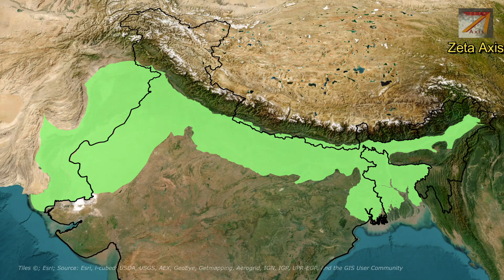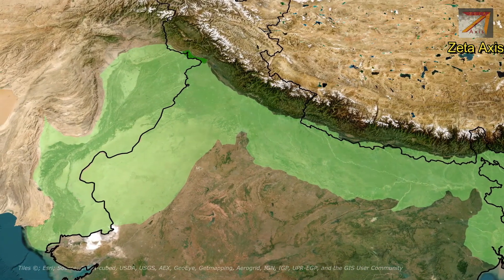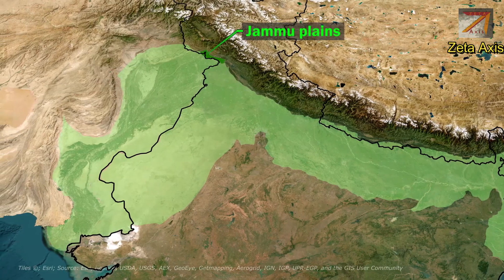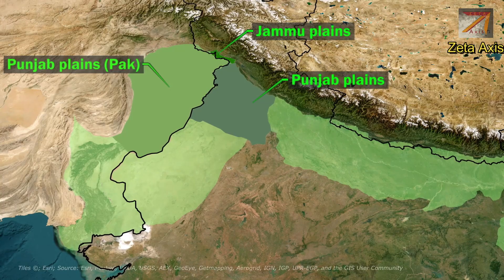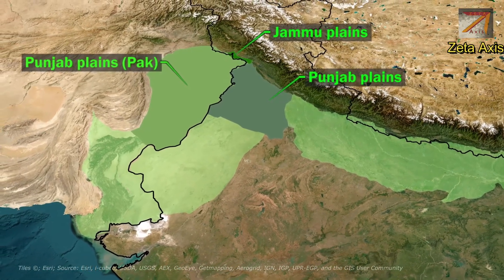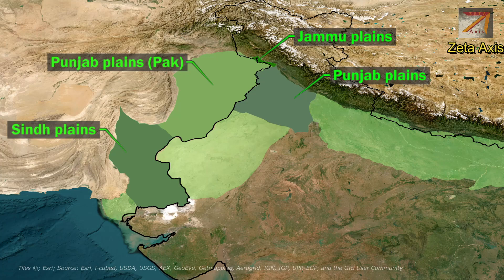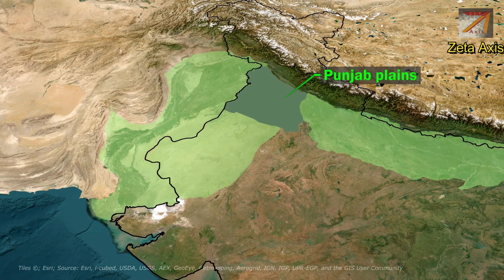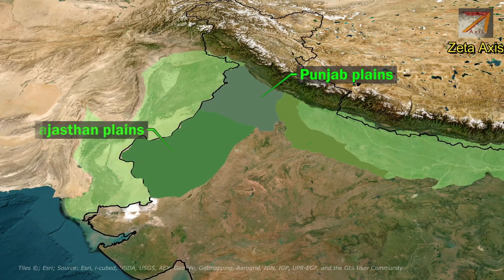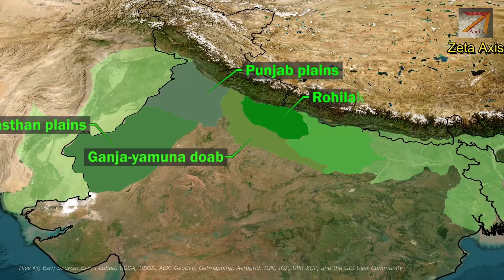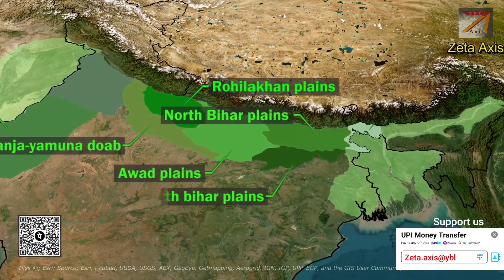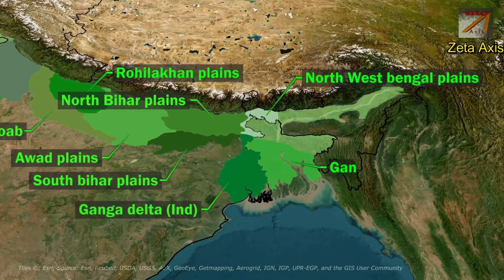Now let's see the region-wise classification of the Northern Plains. In the north it is called the Jammu Plains. On the western side we have the Punjab Plains, extending into eastern Pakistan and northwestern India. In the western part we see the Sindh Plains, located in southern Pakistan, and south of that is the Indus Delta region in southern Pakistan and western India. In India, the Northern Plains can be further divided into Rajasthan Plains, the Ganga-Yamuna Doab region, the Rohilkhand Plains, Awadh Plains, North and South Bihar Plains, North Bengal Plains, the Ganga Delta, and the Brahmaputra Valley in the east.